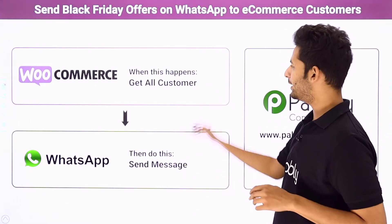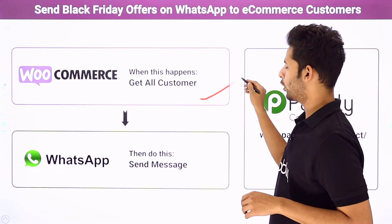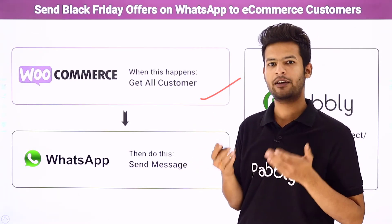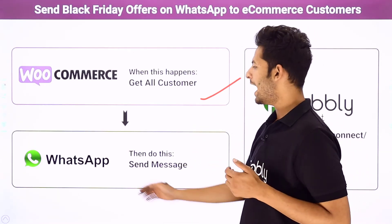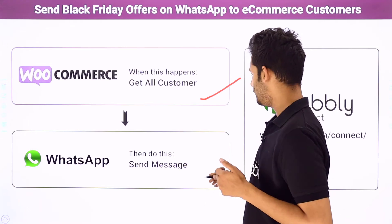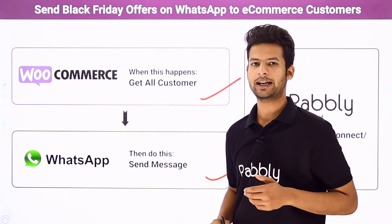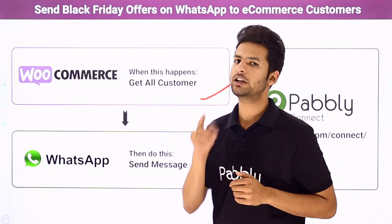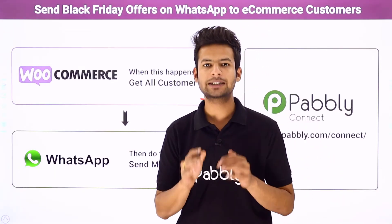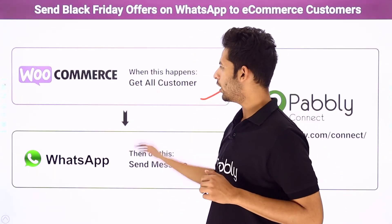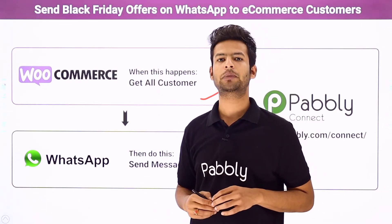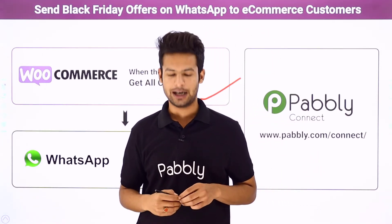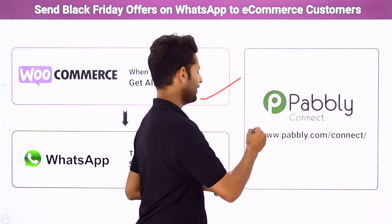For that I have used two applications: first WooCommerce, the e-commerce platform I use for my business, and second WhatsApp, the famous chatting app. But there is no direct link or integration between these two applications. So how do we perform the automation? With the help of Pabbly Connect.